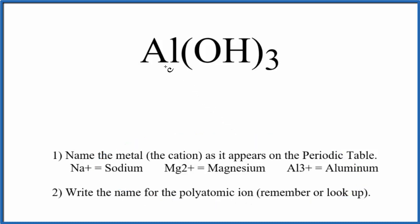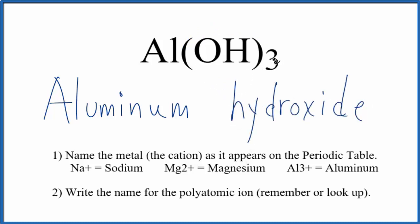First, we write the name for the metal. That's Al, which is aluminum. Next, we're going to write the name for the polyatomic ion, which is the hydroxide ion—probably one you should remember. The name for Al(OH)₃ is just aluminum hydroxide.